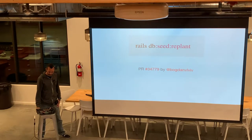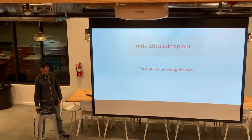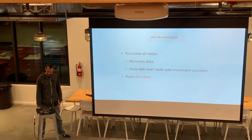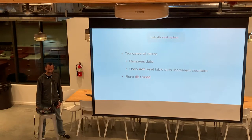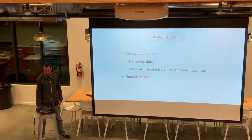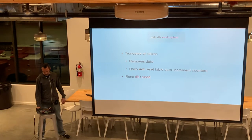Number two: the Rails DB seeded replant rake task is new, added in PR 34779 by Bogdan Vioviv. Rake DB seeded replant basically truncates all the tables — it deletes all the data in the table, but it doesn't reset the auto increment counter. The auto increment counter keeps track of what ID to assign to the next record you create. After it deletes all the data, DB seeded replant runs the seed file.